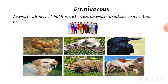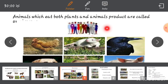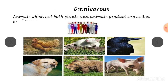The next type is omnivores. Animals which eat both plants and animals' products are called omnivores. For example, human beings eat both plant products — like fruits, vegetables, grains — and animal products like milk, egg, butter, ghee, fish, and meat. So human beings are an example of omnivores. Other examples are hen, rat, crow, dog, bear, and pig.